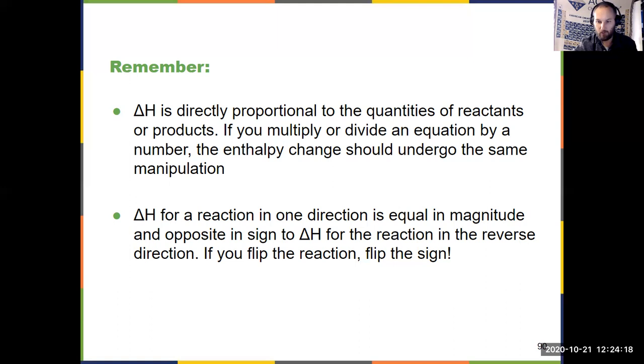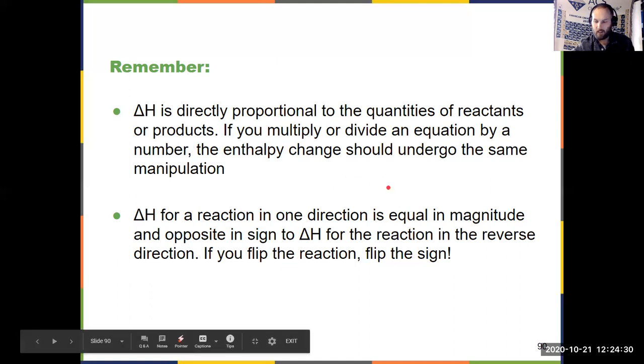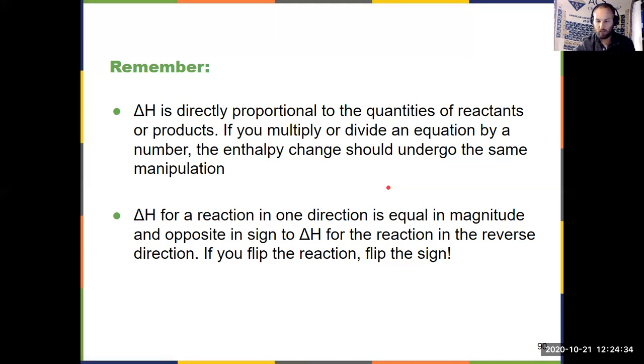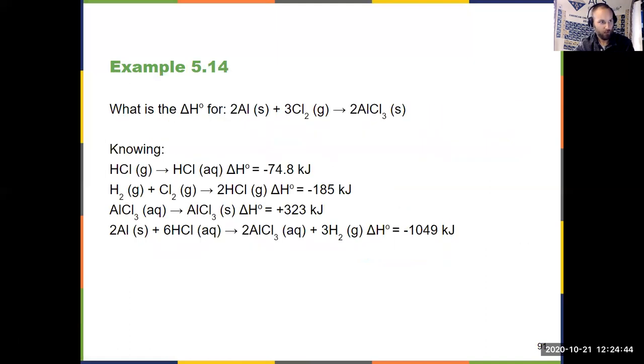So if you double all of the coefficients, and you can't ever just change one coefficient, you have to change everything in a whole reaction. If you double all the coefficients, you have to double the enthalpy value. And if something is endothermic one way, it's exothermic the other way. So you're allowed to flip a reaction around if you want, but then you have to flip the sign as well for the enthalpy value. If it was negative going one way, if you flip the reaction, it's positive the other way.